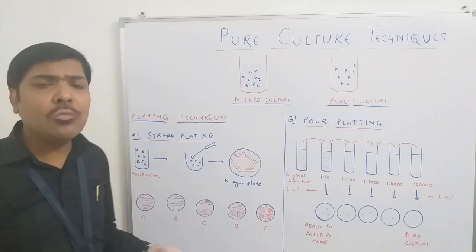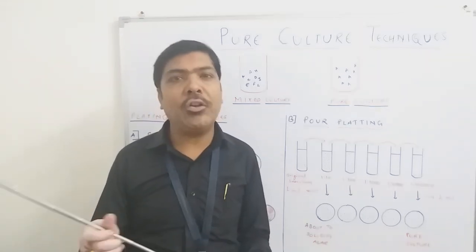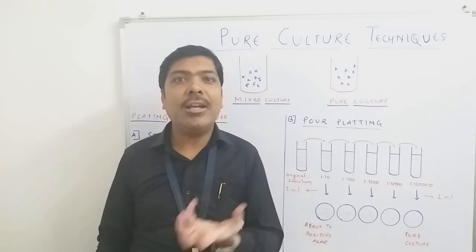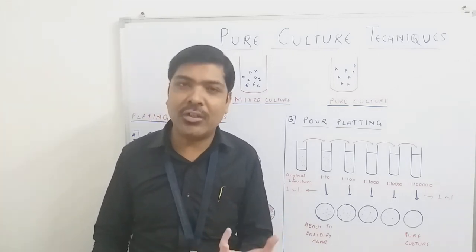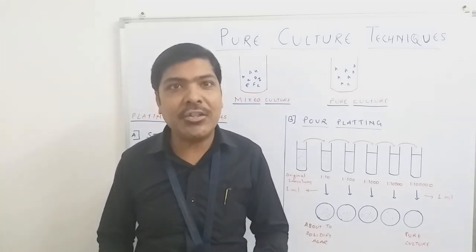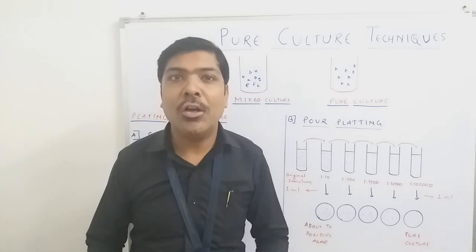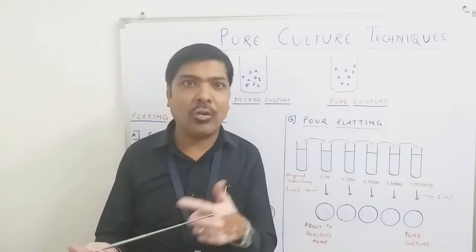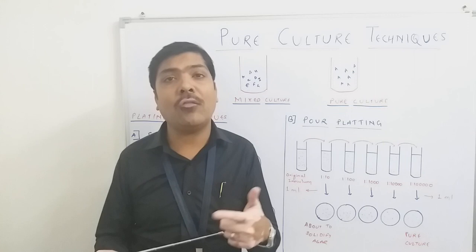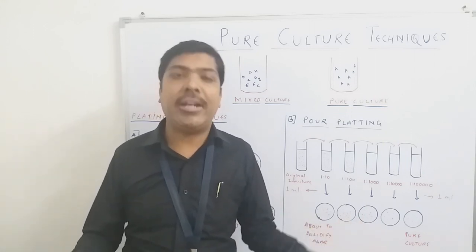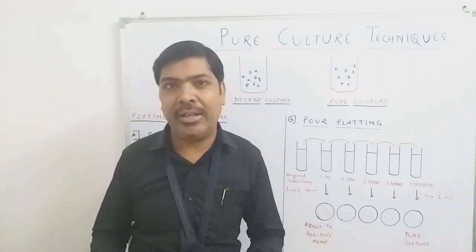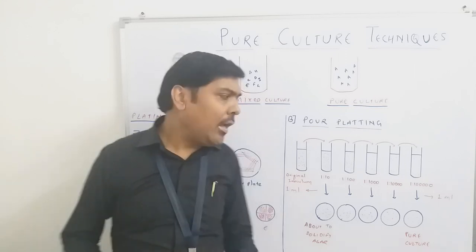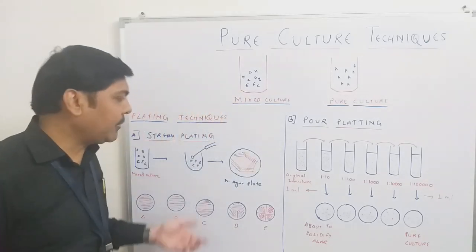We take this sterilized inoculation loop and dip it into the mixed culture. Once you dip the loop, the bacteria available in the mixed culture will stick on its surface. When you take out the loop, different populations of bacteria belonging to different categories will be stuck on the surface of the inoculation loop.